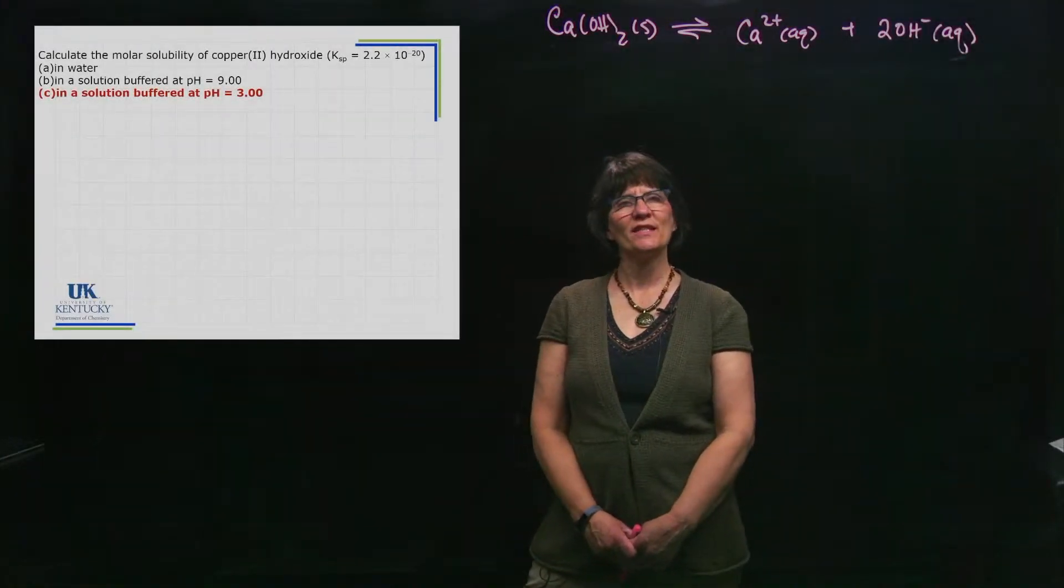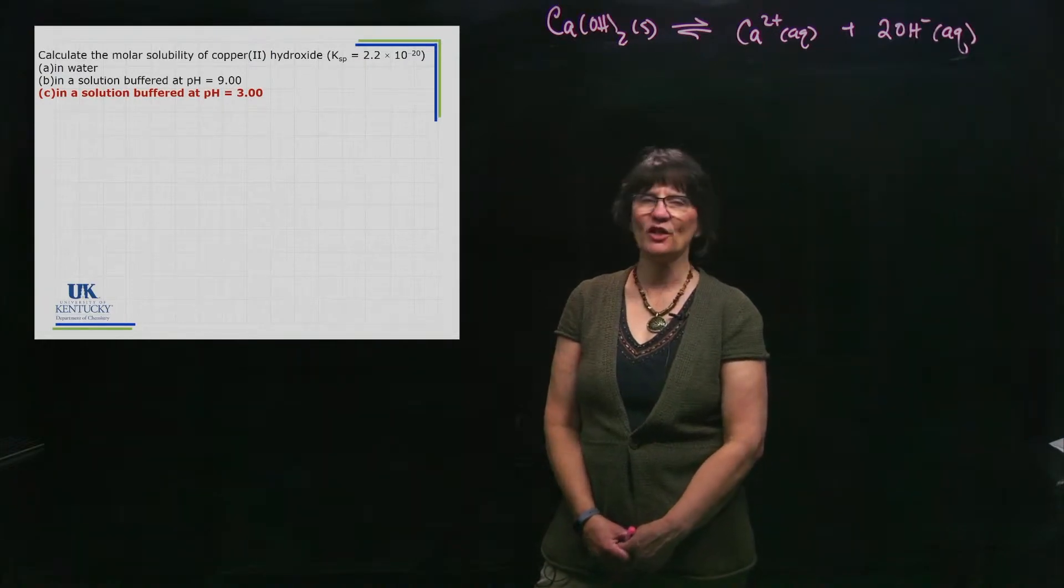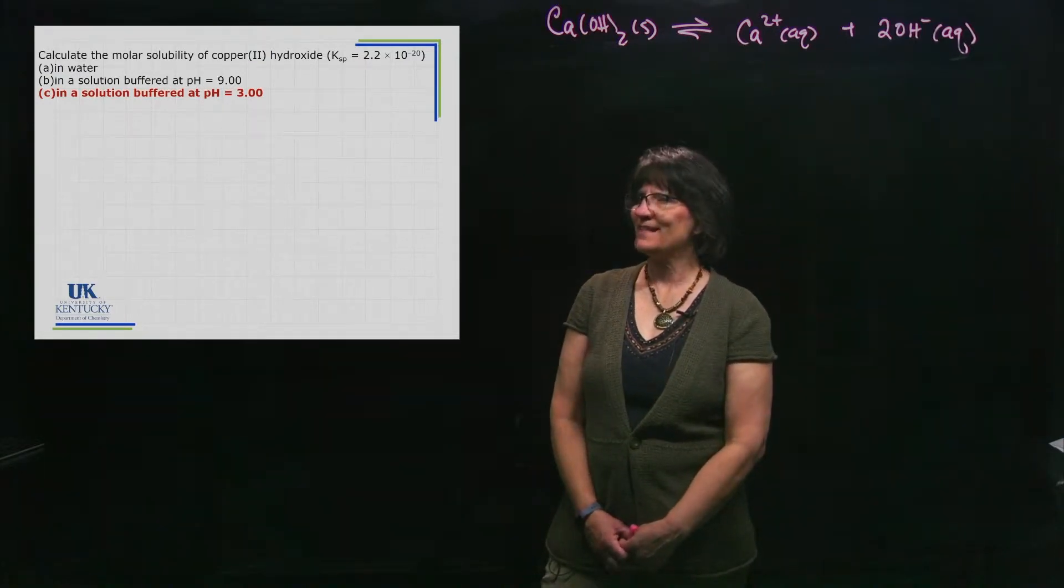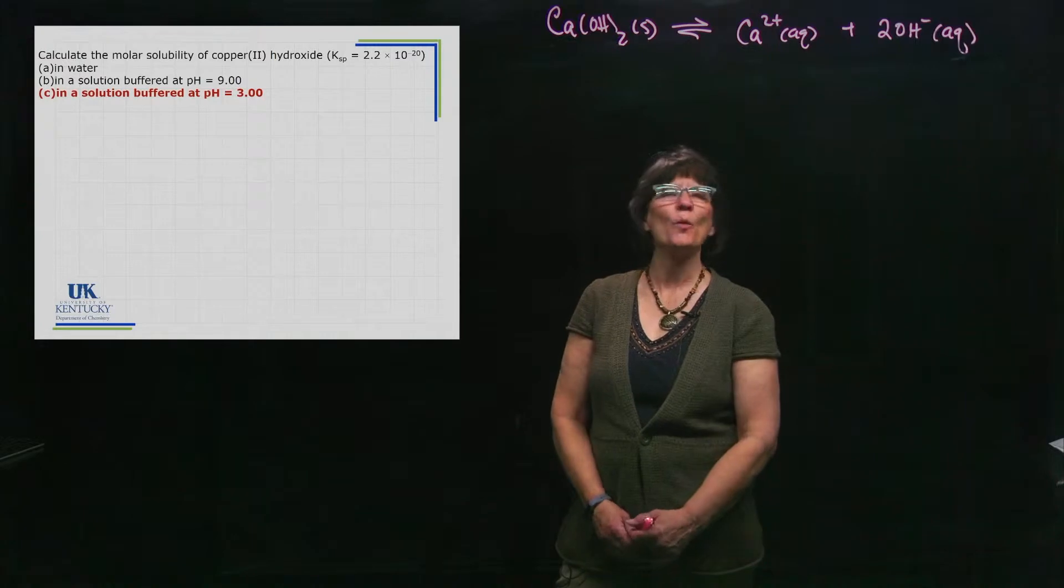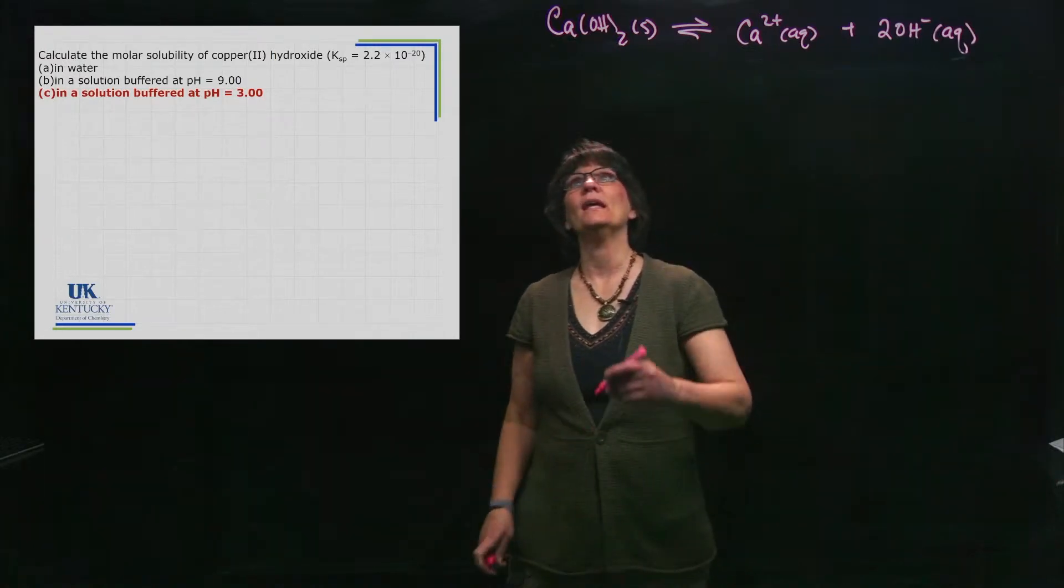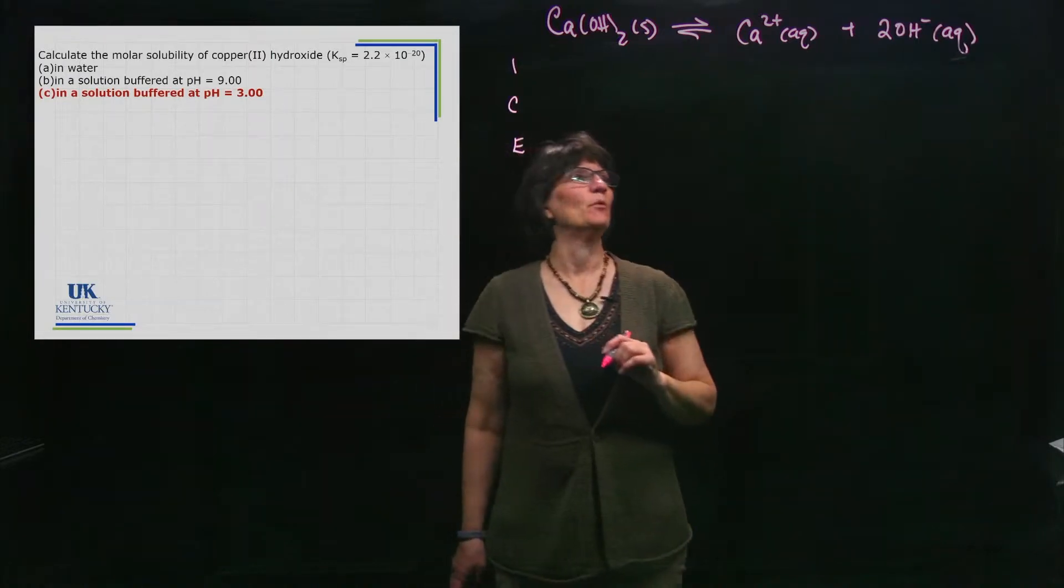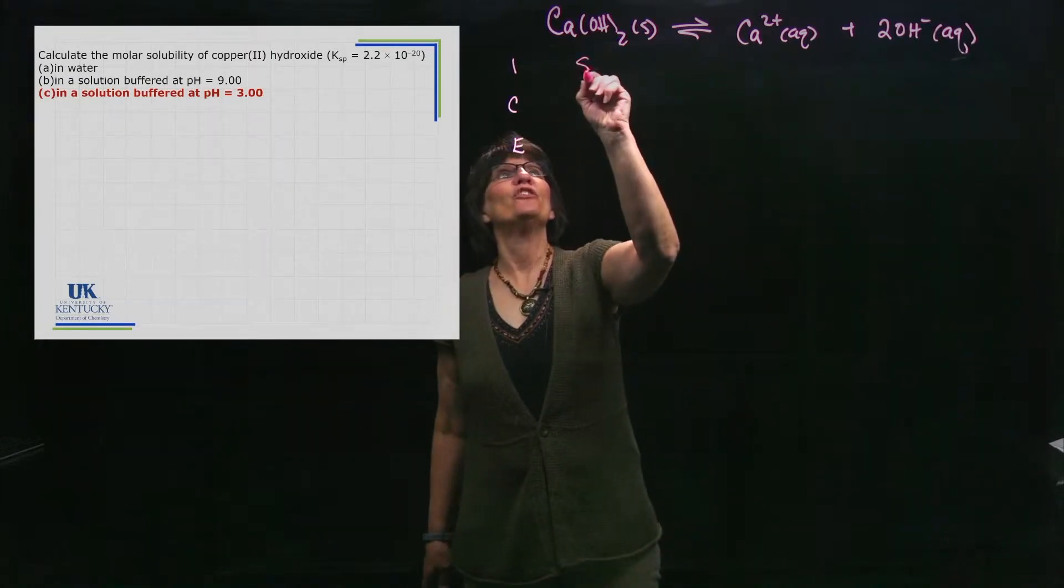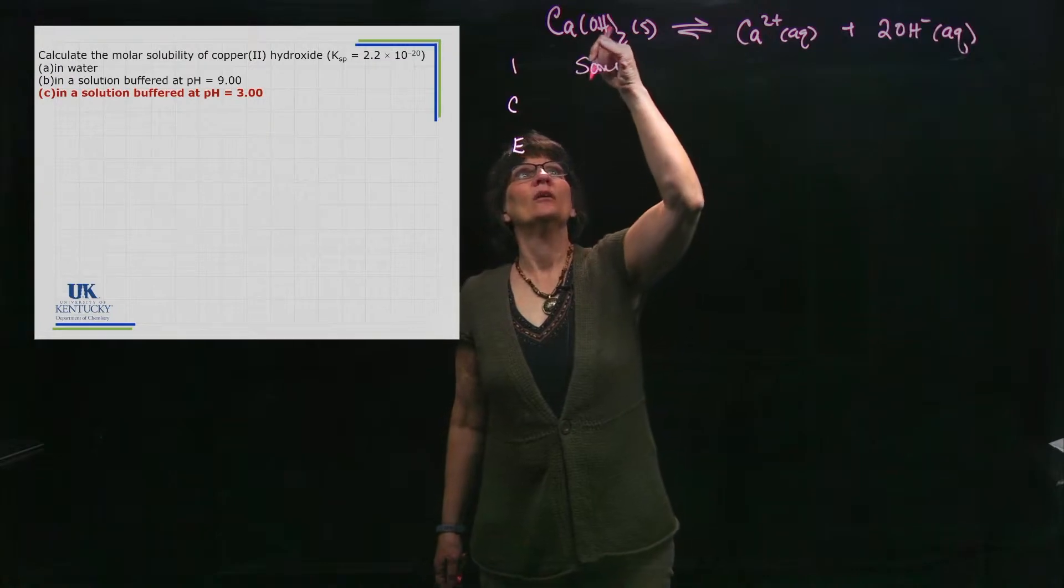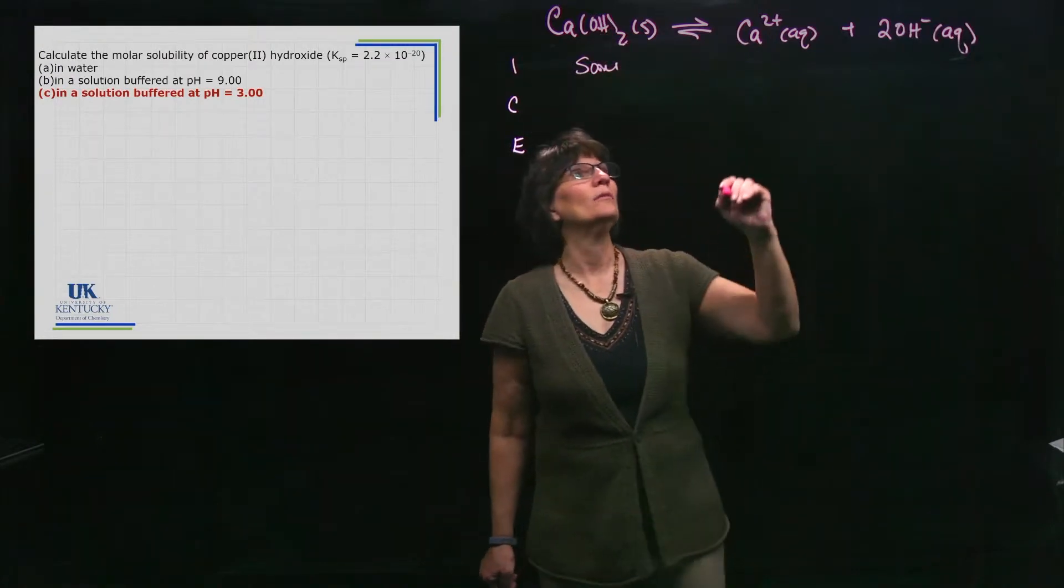In part C we're doing a similar problem, but now it's pH 3, so it's acidic instead of basic, and we want to know the molar solubility. We start off in a similar fashion with an ICE table. We put some of this salt into a solution that doesn't have any calcium yet, but it's buffered at pH 3.